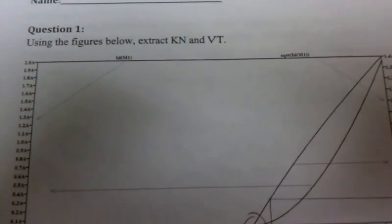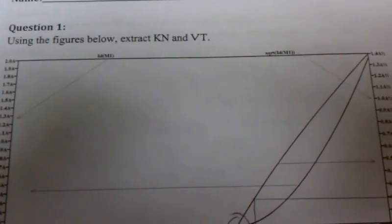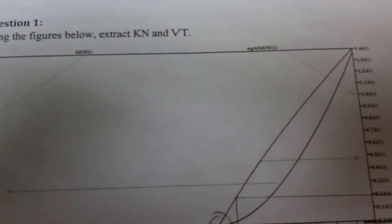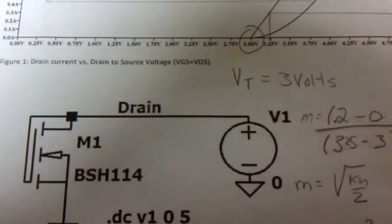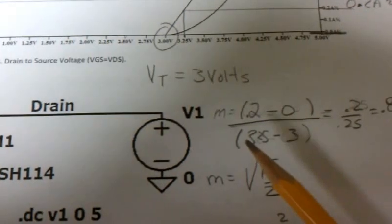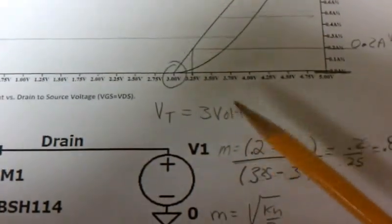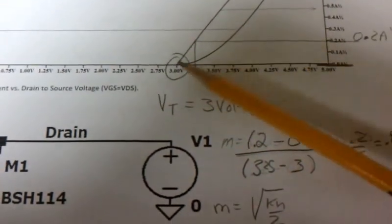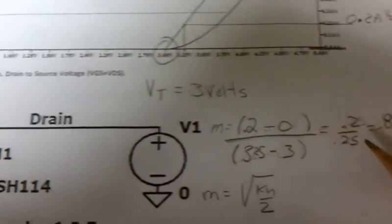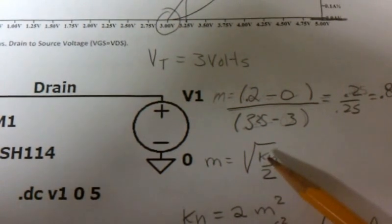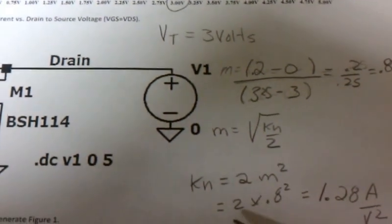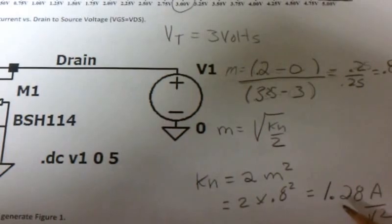Let's go over the solutions to the midterm. First question: we needed to extract KN and VT from an IV curve. We simply find the slope using the square root of ID at 0.8. That slope happens to equal the square root of KN divided by two, giving us our KN value of 1.28.